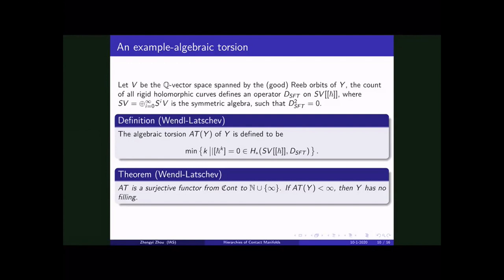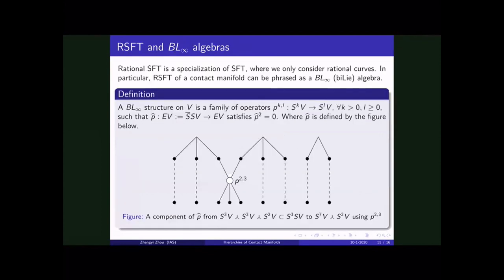And if the value of this functor is smaller than infinity, then Y has no fillings. And in the proof of this theorem, they find a curve actually. So we want ℏ to be zero in the homology. That means we have to find the primitive. In other words, we kind of want to find the curve to cure these classes. And in the proof, in their proof, they found the curve actually has genus zero. So they ask the question that can we reinterpret this result only using rational theory. So this example here is using all holomorphic curves.